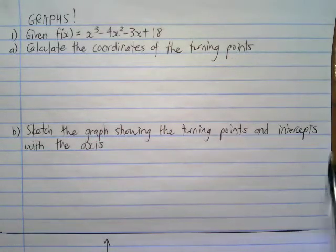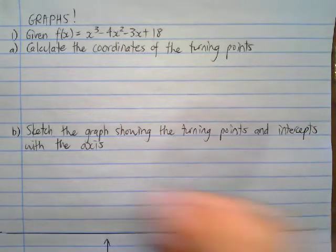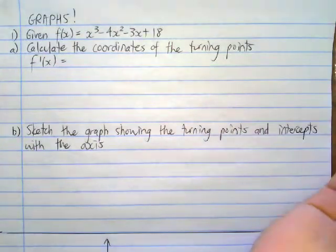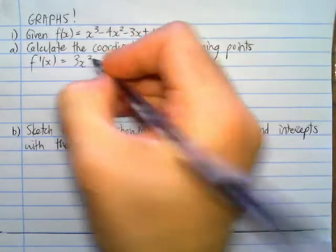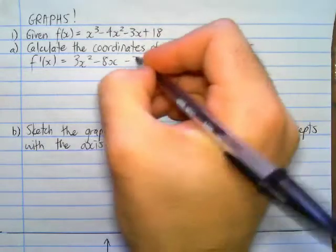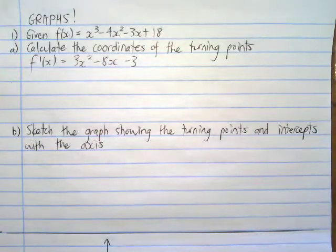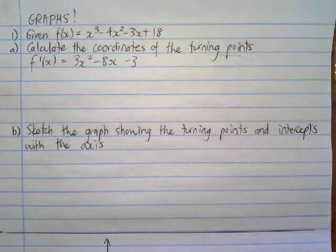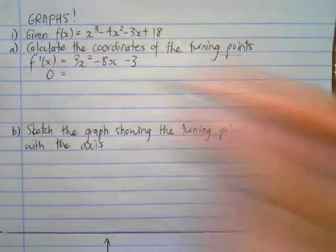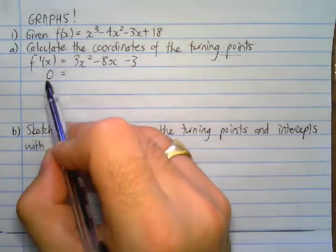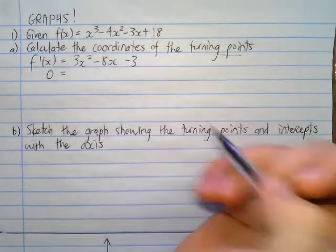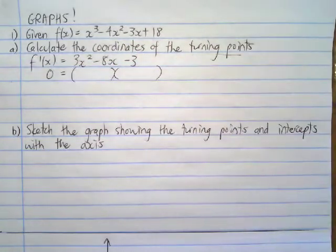For turning points, we need to first find the first derivative of our function. The first mark you'll get is to note that the first derivative is 3x squared minus 8x minus 3. At the turning points or stationary points, the first derivative — which tells you the gradient at a point — will be equal to zero. So you get a mark for setting the first derivative equal to zero, giving us an equation we can now factorize as a quadratic trinomial.